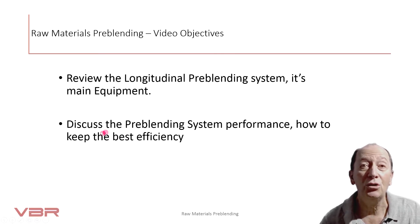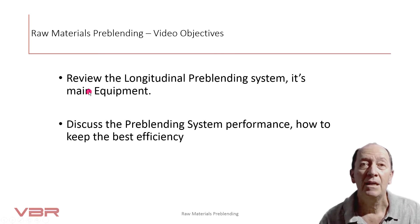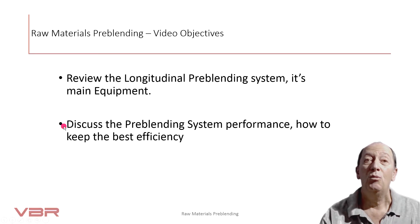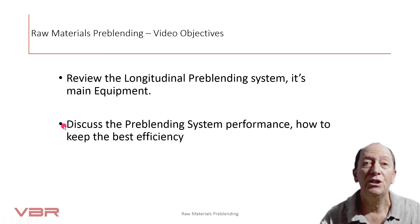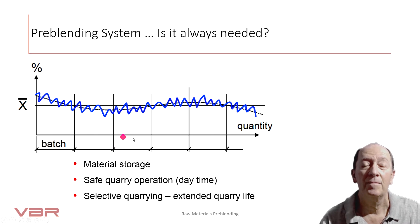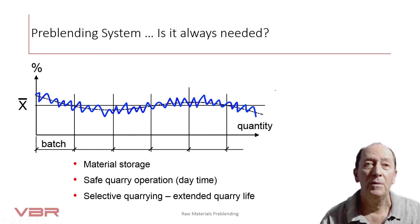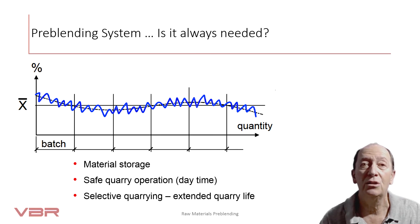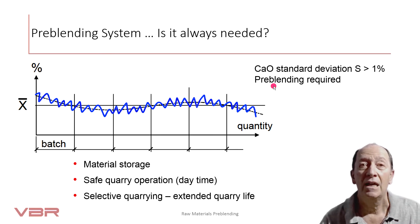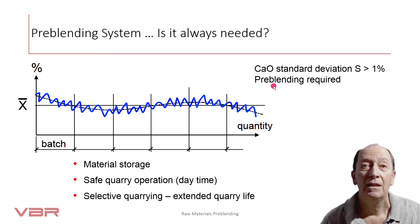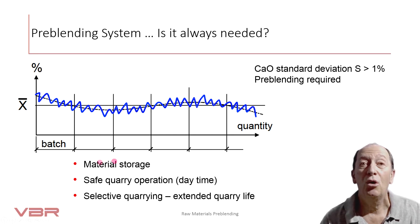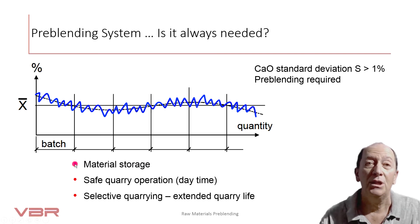We will focus on the longitudinal pre-blending system and check what factors influence system performance and what you can do to improve efficiency. As a rule of thumb, raw material components with standard deviation fluctuations of calcium oxides higher than one percent should be pre-blended. In addition to pre-homogenizing, there are other reasons for installing and using pre-blending systems.